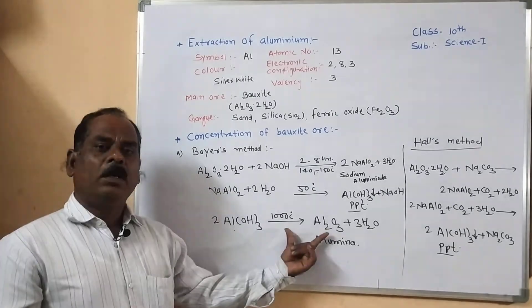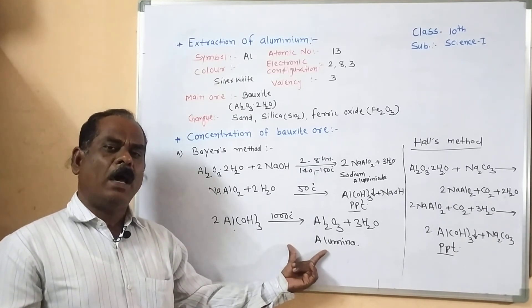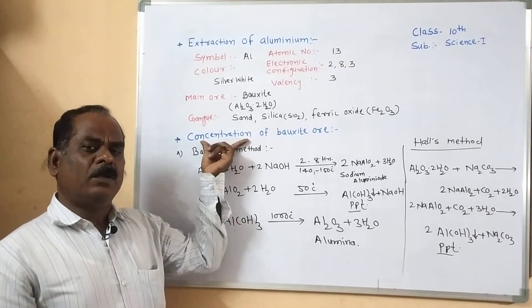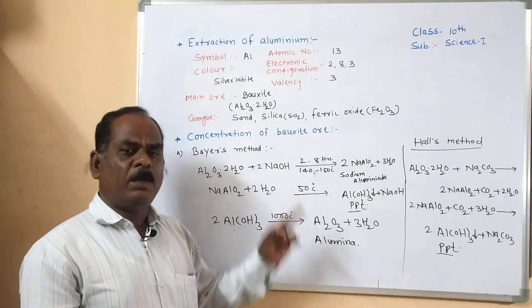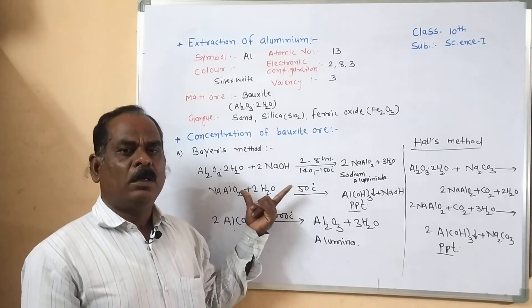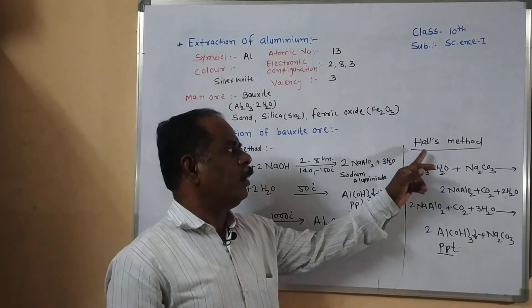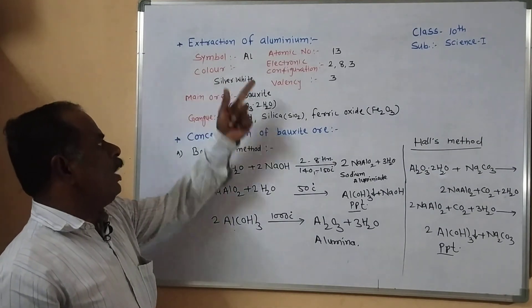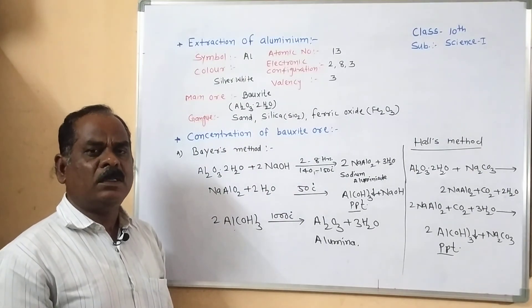Take the pure alumina and carry out the electrolysis process to separate aluminum from alumina. This is the second step involved in the extraction of aluminum, which will be covered in the next period. Questions may be asked in the examination such as: write short notes on the Bayer method, write short notes on concentration of bauxite ore by the Hall method, or explain the extraction of aluminum or the concentration of bauxite ore.